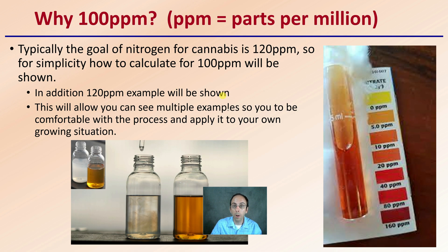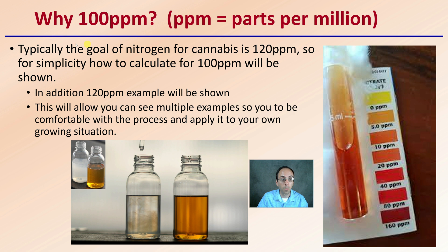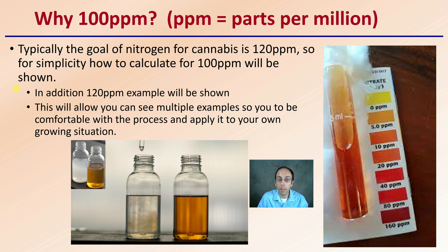So why 100 parts per million? PPM does stand for parts per million. Typically the goal of nitrogen for cannabis is 120 parts per million, so for simplicity we're going to show how to calculate 100 parts per million. In addition I will show a 120 parts per million example, allowing you to see multiple examples so you'll be comfortable with the process and apply it to your own particular growing situation.